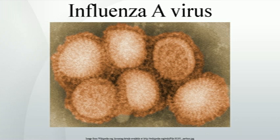In the 2009 flu pandemic, the virus isolated from patients in the United States was found to be made up of genetic elements from four different flu viruses: North American swine influenza, North American avian influenza, human influenza, and swine influenza virus typically found in Asia and Europe — an unusually mongrelized mix of genetic sequences. This new strain appears to be a result of reassortment of human influenza and swine influenza viruses, in all four different strains of subtype H1N1.